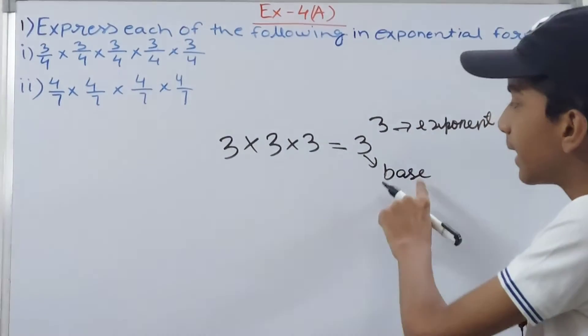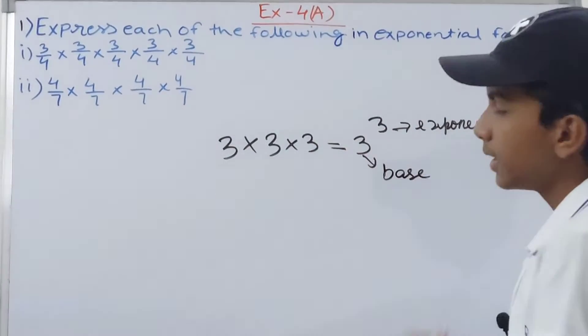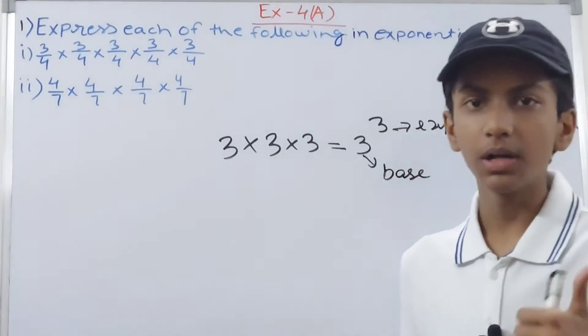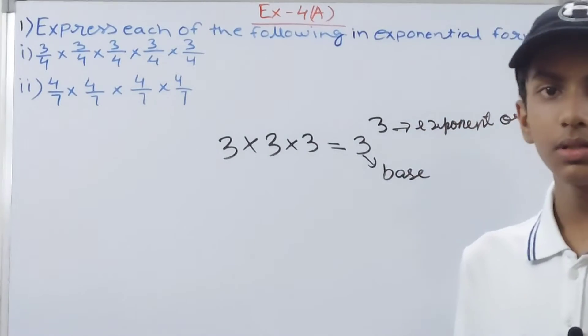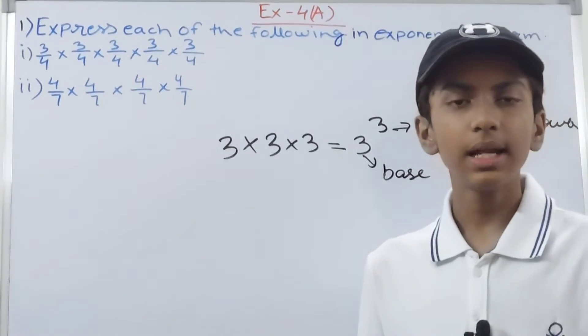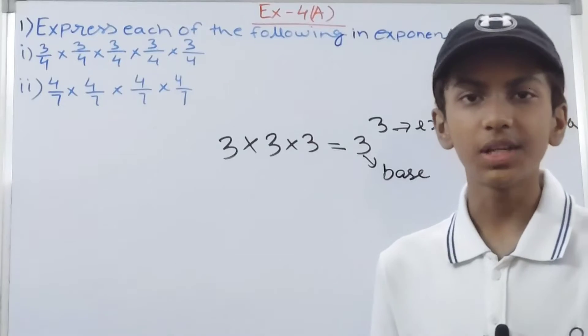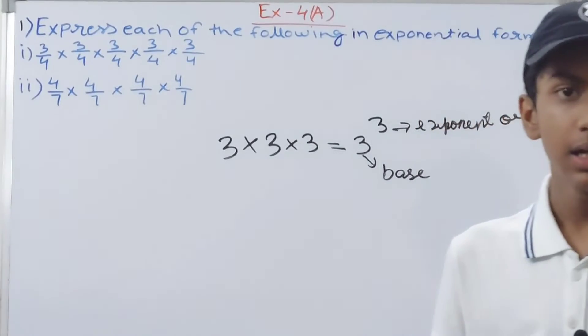So three words for this: exponent, power, and index, and just one base here. Base is the number that is being multiplied and exponent is the number which tells us how many times the base is being multiplied by itself.